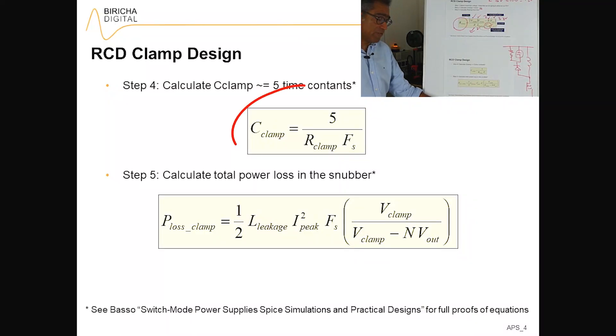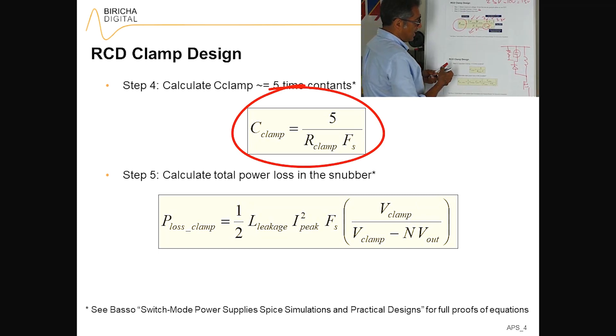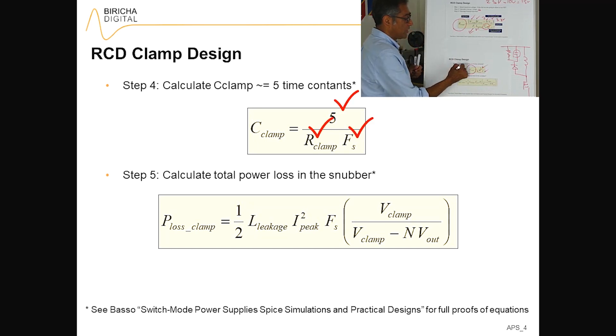And five time constants is not an unreasonable value. So again, that is taken from Christoph Basso's book. You take five time constants, you have just calculated R clamp, so you know this one, you know your switching frequency, you know five, you can also calculate value of C clamp.